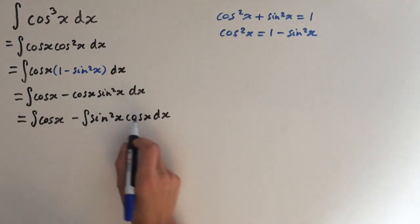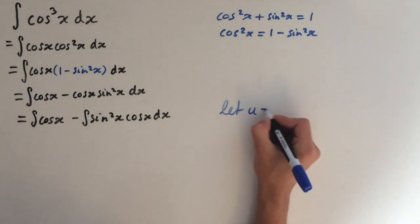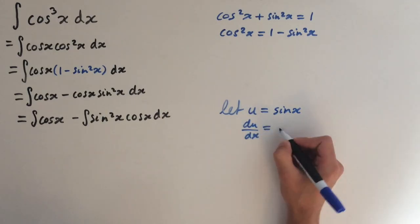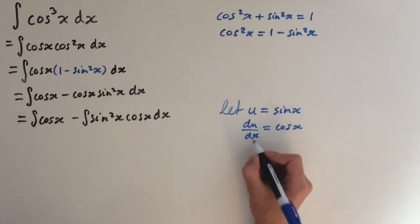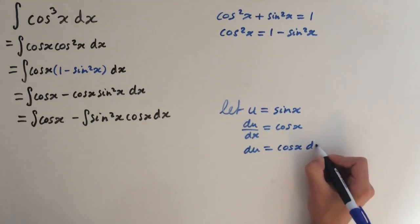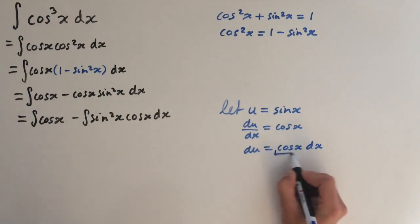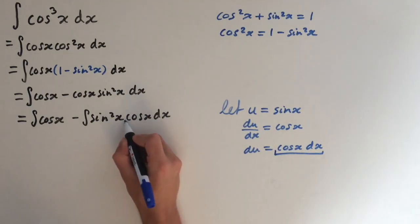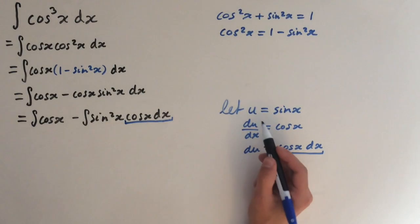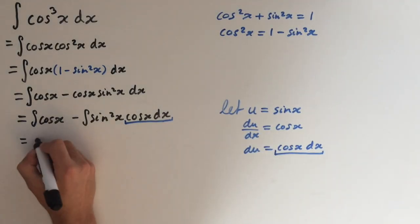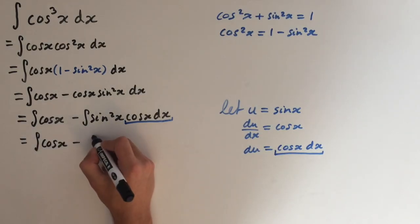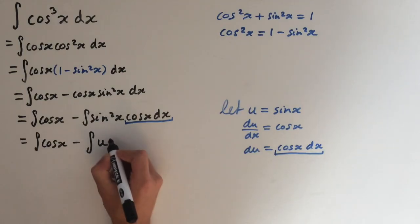For this second integral, we let u equal sin of x. Differentiating gives du/dx equals cos of x, so du equals cos of x dx. We can substitute cos of x dx with du, and express sin squared of x as u squared. This gives us the integral of cos of x minus the integral of u squared du.